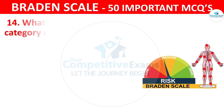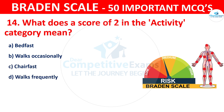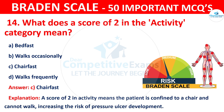Question number fourteen: What does a score of 2 in the activity category mean? Your options are bedfast, walks occasionally, chairfast, or walks frequently. The correct answer is C — chairfast. A score of 2 in activity means the patient is confined to a chair and cannot walk, increasing the risk of pressure ulcer development.